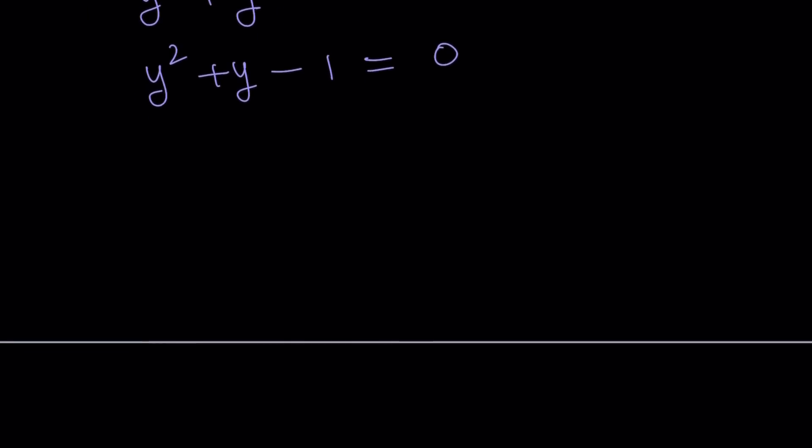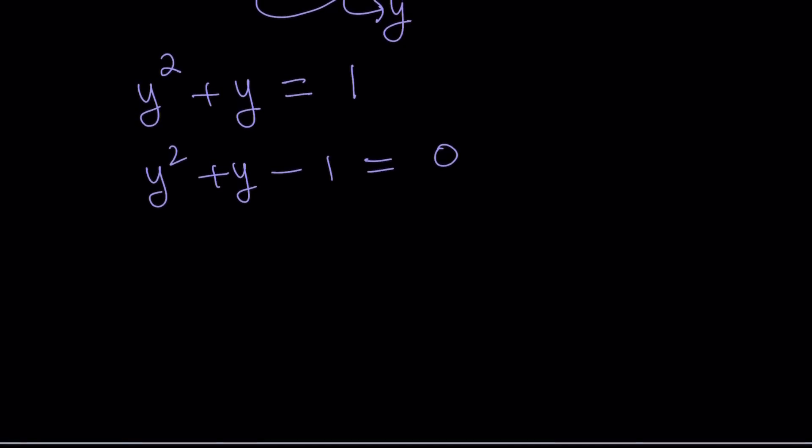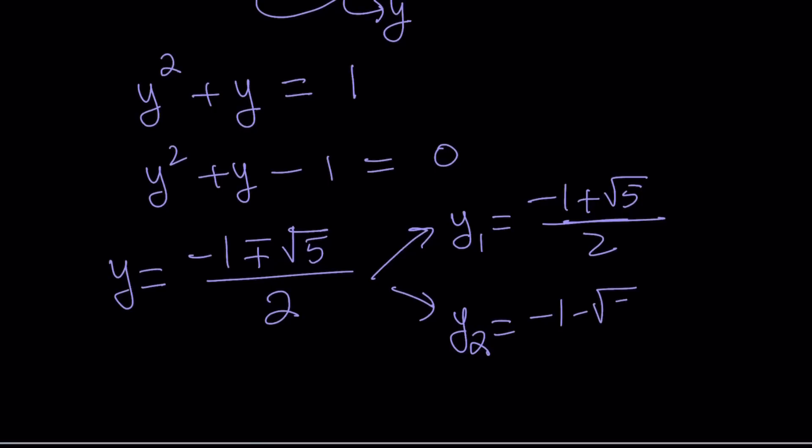This quadratic equation has interesting roots. Let's find the solutions. y equals negative b plus minus the square root of b squared minus 4ac, but that's just going to be the square root of 5 from the quadratic formula divided by 2. This splits into two solutions: y sub 1 is negative 1 plus root 5 over 2, and y sub 2 is negative 1 minus root 5 over 2. Does this mean our equation has two solutions?